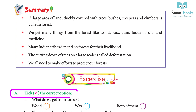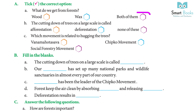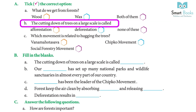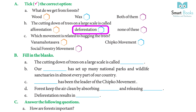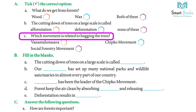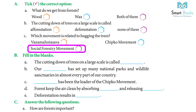Exercise A — Choose the correct option. (a) What do we get from forests? Answer: Both wood and wax. (b) The cutting down of trees on a large scale is called — afforestation, deforestation, or none of these? Answer: Deforestation. (c) Which movement is related to hugging trees — Van Mahotsava, Chipko Movement, or Social Forestry Movement? Answer: Chipko Movement.